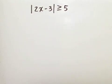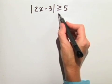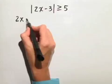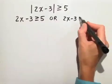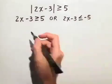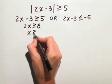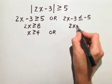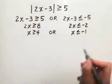Now let's solve the absolute value inequality using equivalent absolute value equations. Since we have a greater than or equal to absolute value inequality, we break this into two inequalities. First, we drop the absolute value and write 2x minus 3 is greater than or equal to 5. Or, we write 2x minus 3 is less than or equal to negative 5, reversing direction and negating the right side. Solving the first gives x is greater than or equal to 4, and solving the second gives x is less than or equal to negative 1.